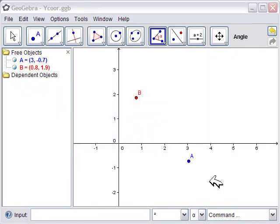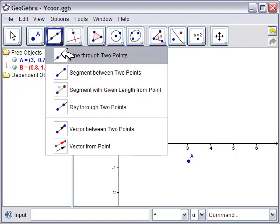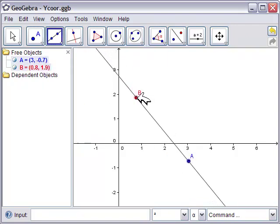So here we start with two points, A and B. Let's draw the line between A and B. So line, click on A, click on B, and we get a line, little a.